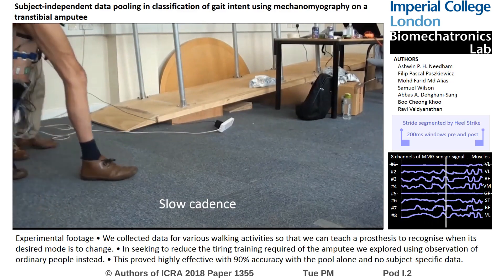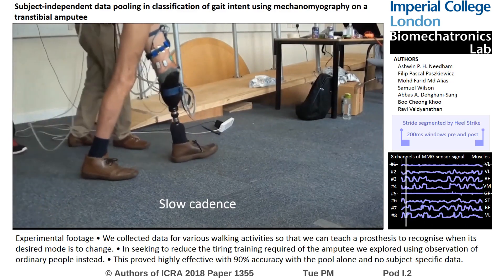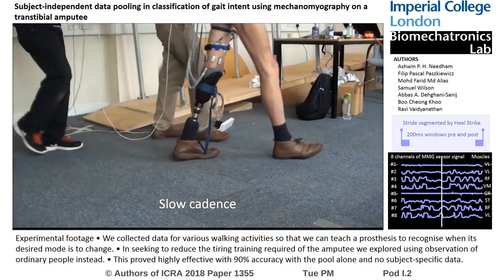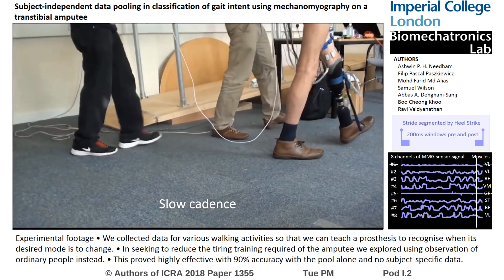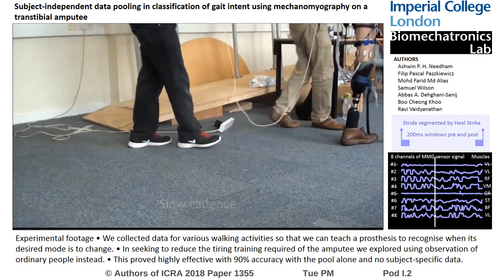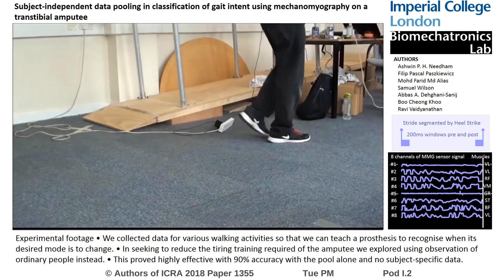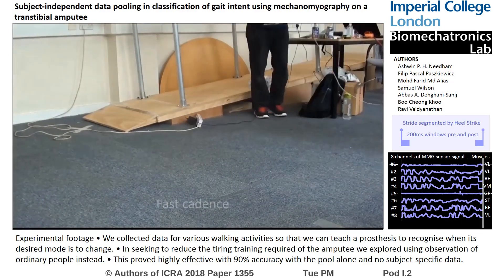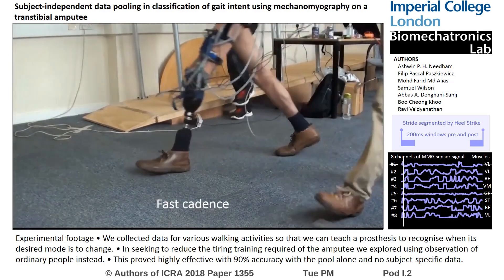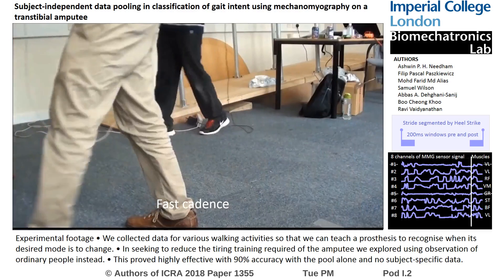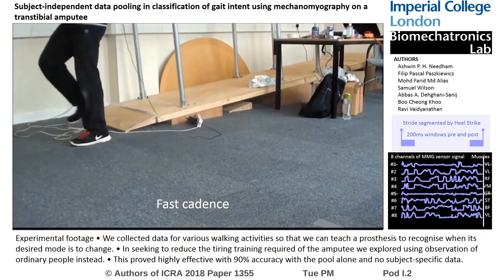Subjects were led through a course of level ground walking at self-selected cadences, and ramp ascent and descent at an inclination of five degrees, to collect an average of 24 heel strike events for each subject and for each activity.